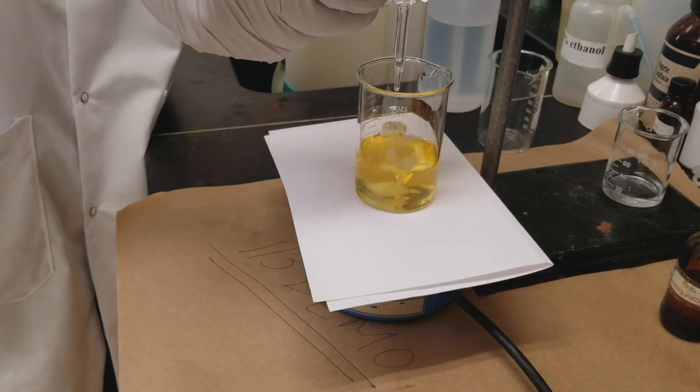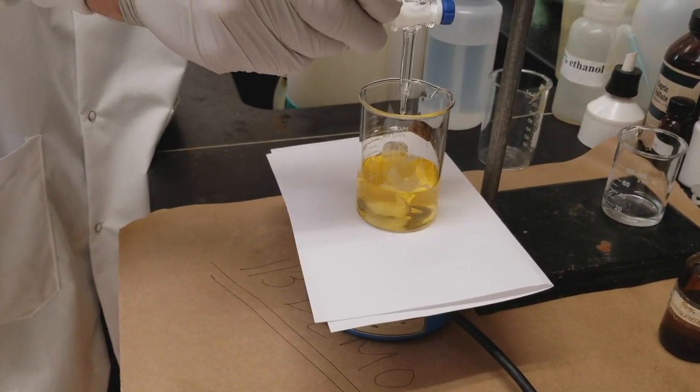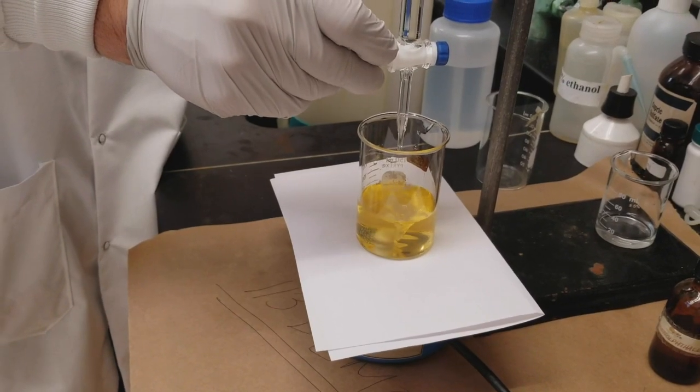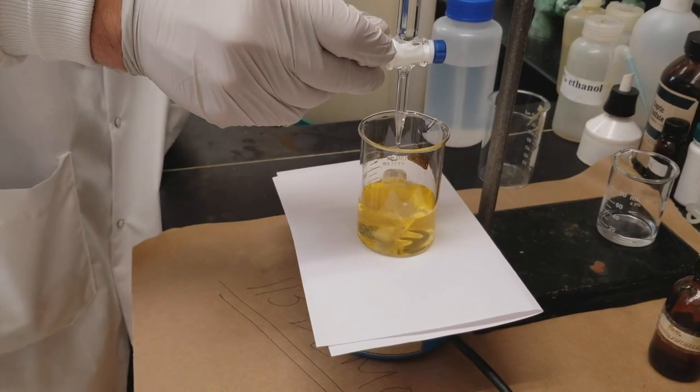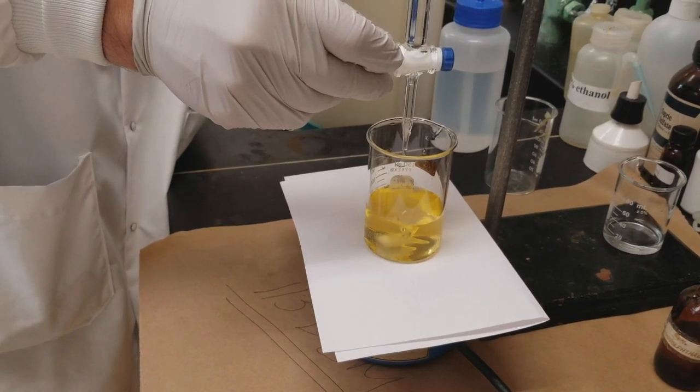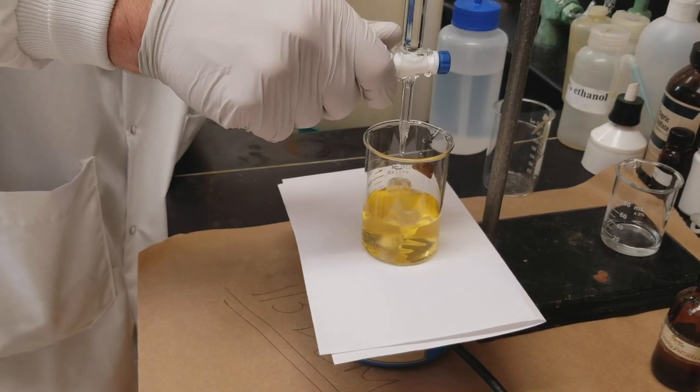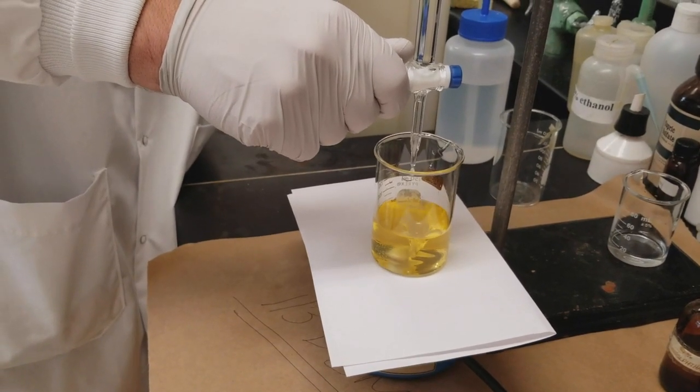And now again we're just going to slowly open up the stopcock of our burette. Let that HCl solution start to add. So we've got our dropwise addition going.